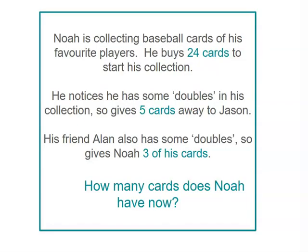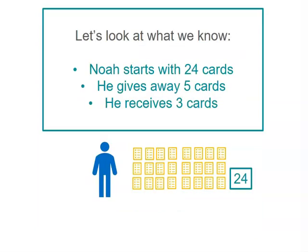Noah's collecting baseball cards and he buys 24 cards. He's pretty happy with his cards except he's found there are some doubles, but he's decided to give those away to his friend Jason. Five cards, which are his doubles, are going to be given away. His friend Alan also has some doubles, so he's going to give those to Noah. Let's look at what we know — Noah starts with 24 cards, and you can see the picture at the bottom of the screen.